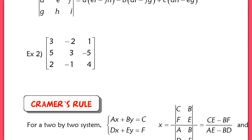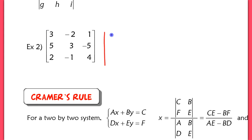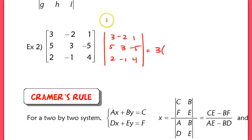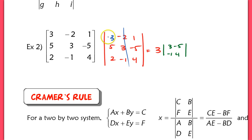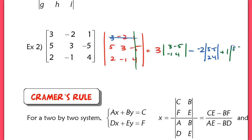Let's go through an example — we'll do one example here. For the determinant, this equals 3 times the determinant of the 2x2 you get by crossing out 3's row and column: that's (3)(4) minus (negative 1)(negative 5). Then minus negative 2 times the determinant of 5, negative 5, 2, 4. And then add 1 times the determinant of 5, 3, 2, negative 1.